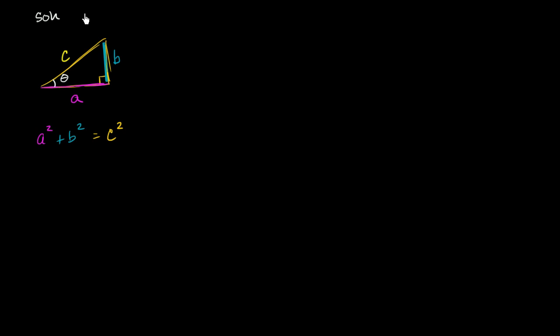So before we do that, let's just write down SOHCAHTOA, just so we remember the definitions of these trig functions. So sine is opposite over hypotenuse. CAH, cosine is adjacent over hypotenuse. And TOA, tan is opposite over adjacent. We won't be using tan, at least in this video.